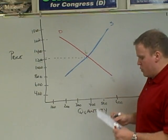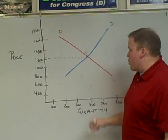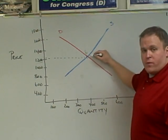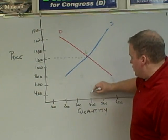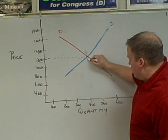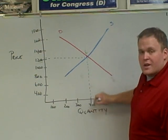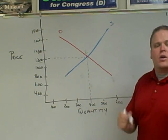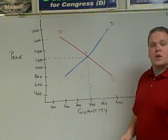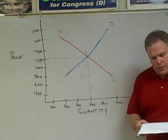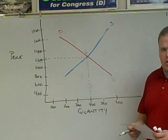The next question asks: what is the equilibrium quantity? We find that intersection and draw a dotted line down, and we find that the equilibrium quantity is 400 units.